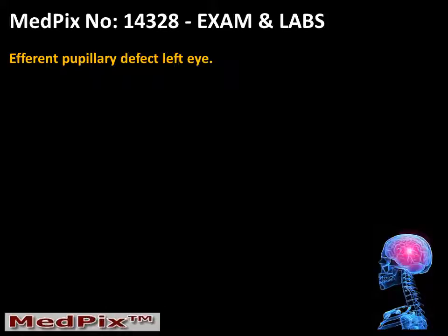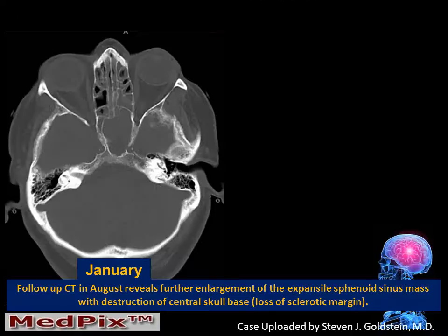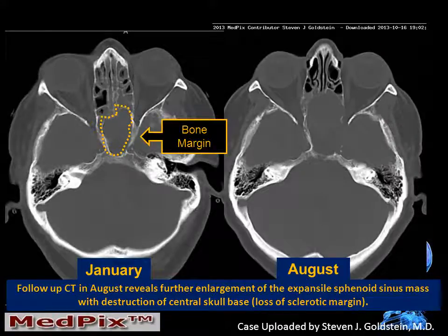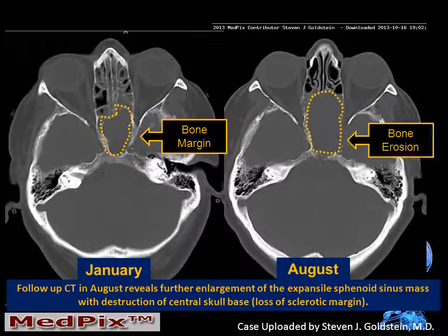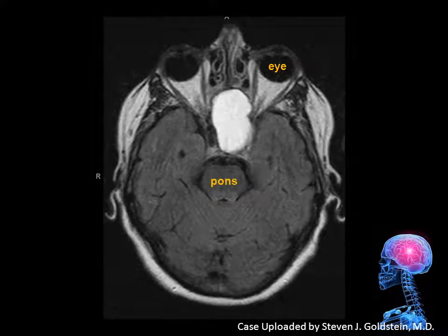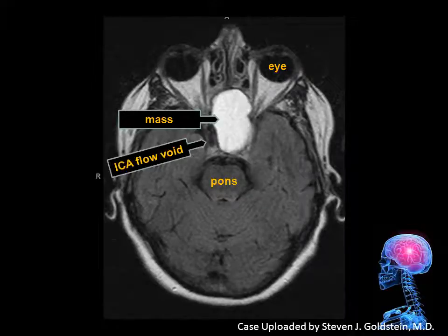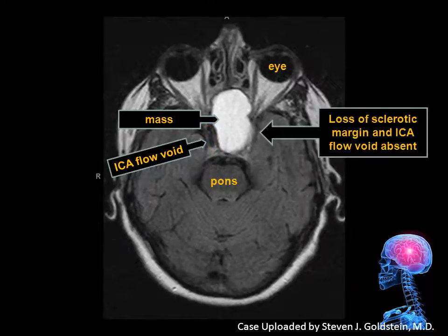Our patient now has a new afferent pupillary defect in the left eye. Comparing the original image from January, we can see the bone margin. But in the current image from August, the mass has now expanded, and we have lost the bony detail of the lateral margin on the left side. Looking more carefully at the MR, we can see the mass with fluid signal. We can also see the internal carotid flow void in the cavernous sinus — a normal appearance on the right side — but we do not see a corresponding carotid flow void on the left side, and we have lost the sclerotic bone margin.